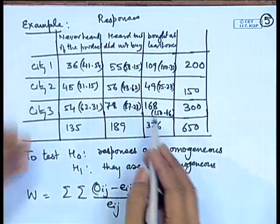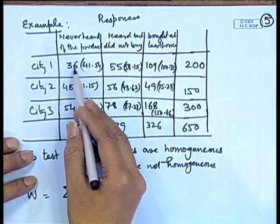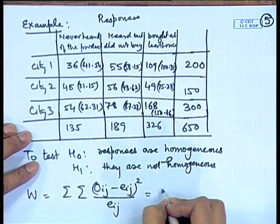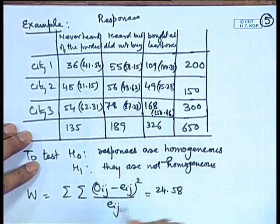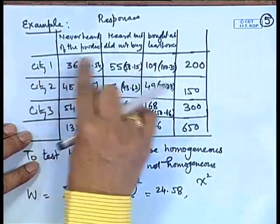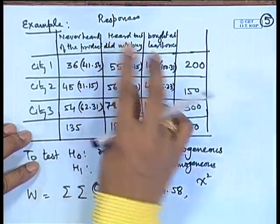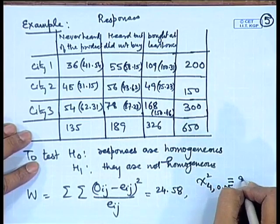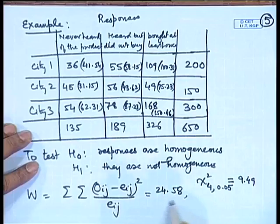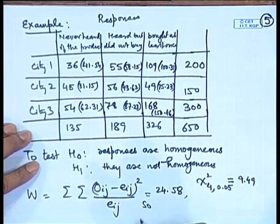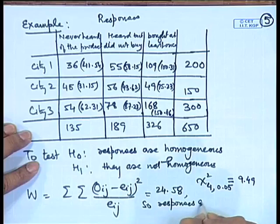Based on the calculations of O_ij and E_ij we evaluate W, which turns out to be 24.58. The degrees of freedom are (3−1)(3−1) = 4. At the 5% level of significance, the critical chi-square value is 9.49. Since W = 24.58 is much larger than 9.49, H₀ is rejected — meaning the responses are not homogeneous.